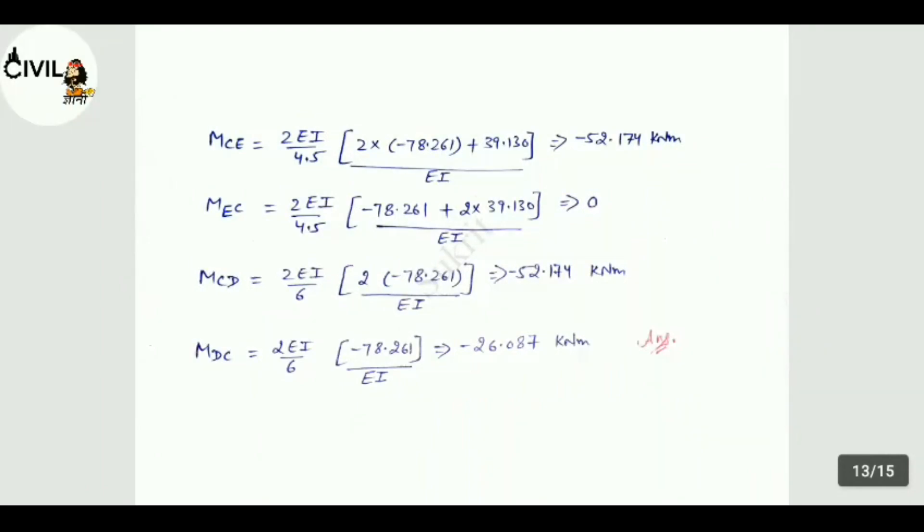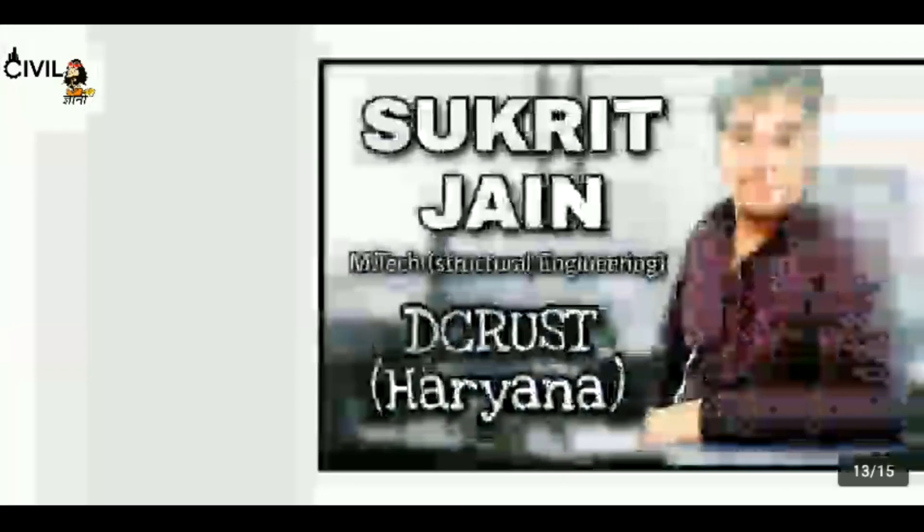Now for MCD, MF_CD is zero. Formula will be 2EI/L times 2θ_C plus θ_D. Now θ_D is also zero. And θ_C value is negative minus 52.174 kNm. Now for MDC, MF_DC is zero. Formula will be 2EI/L times 2θ_D plus θ_C. θ_D is zero. θ_C value is minus 78.261 divided by EI. Further MDC equals minus 26.087 kNm. Here the question finishes.